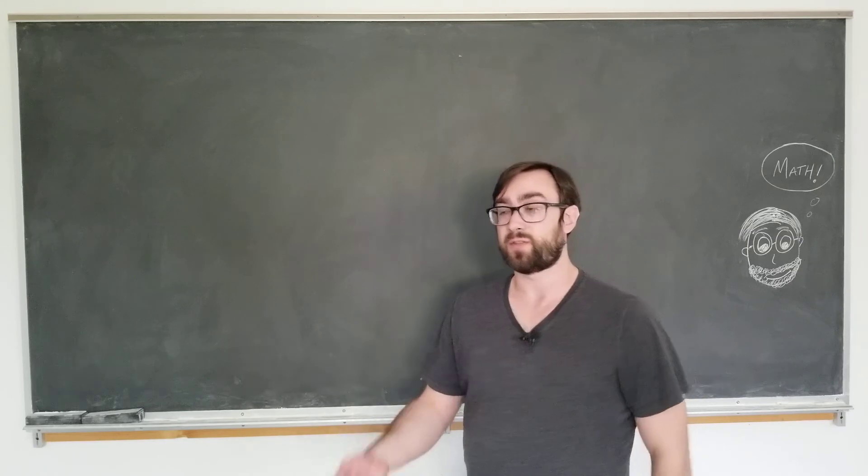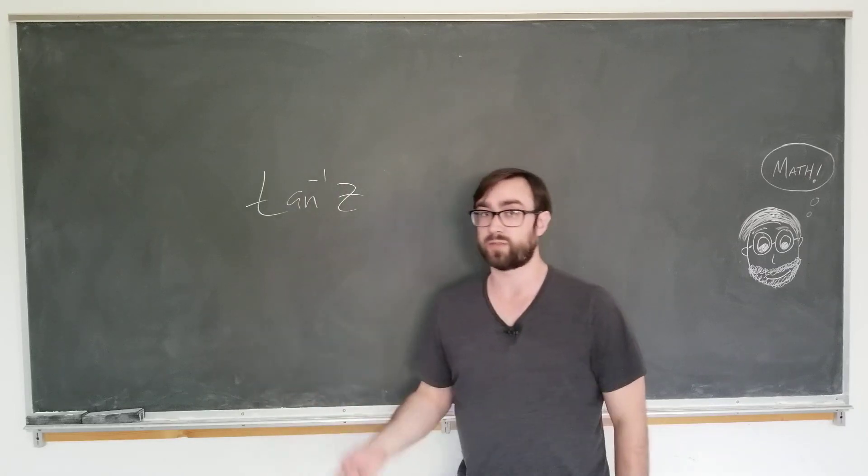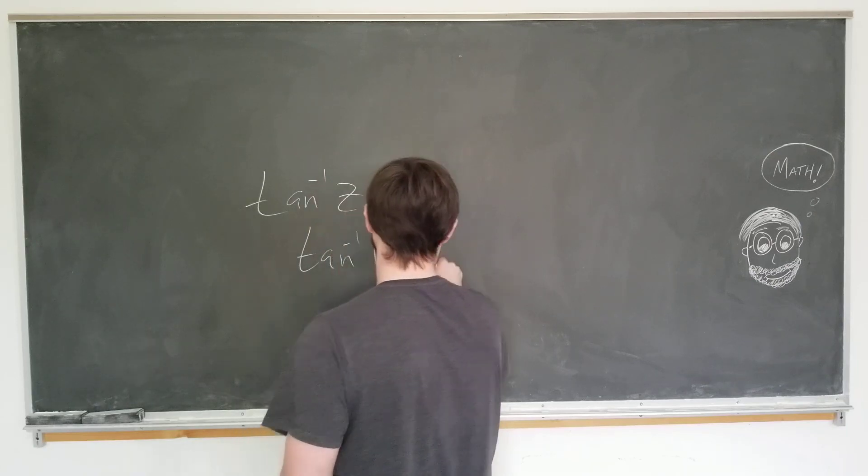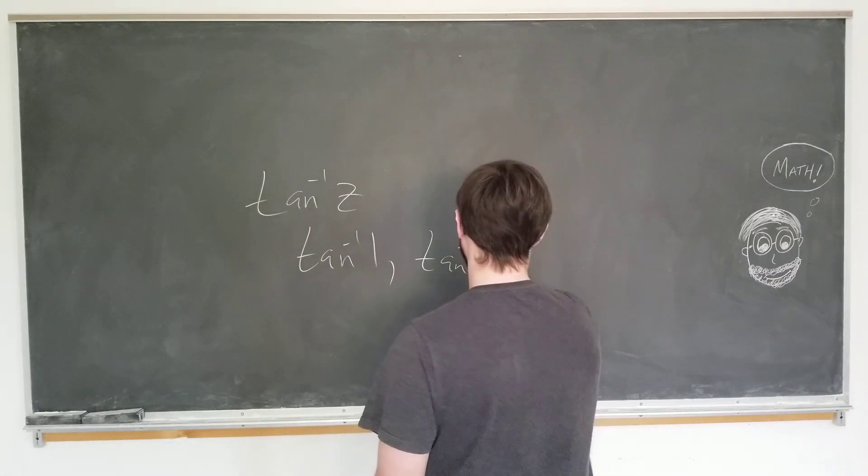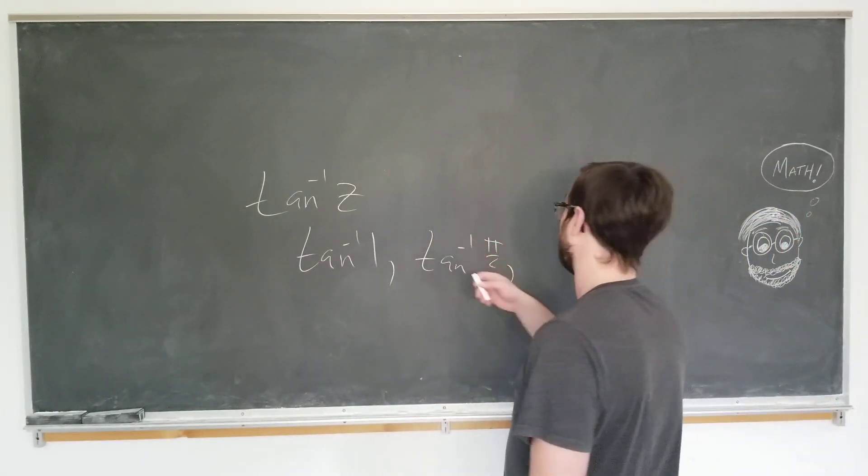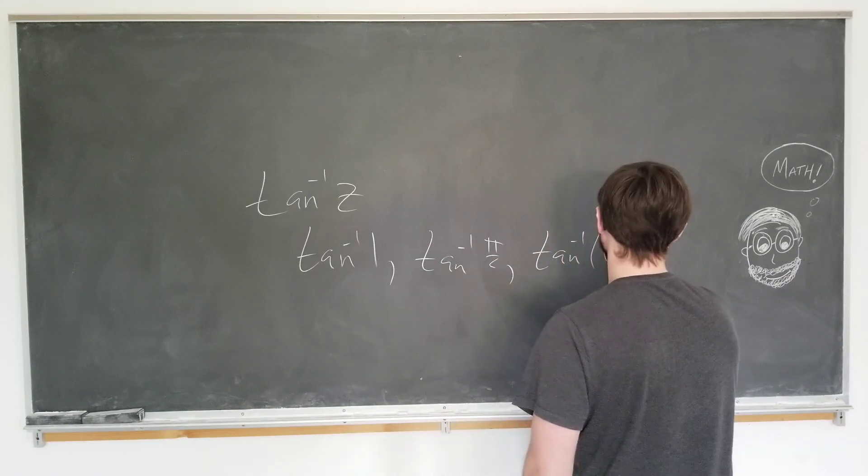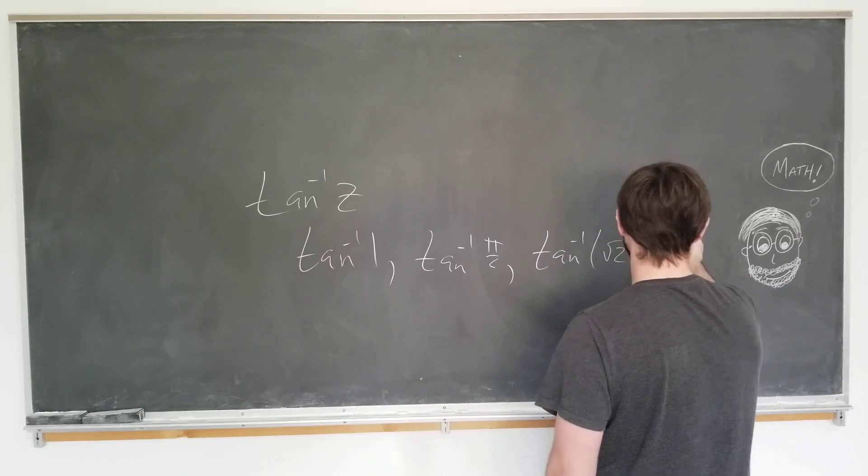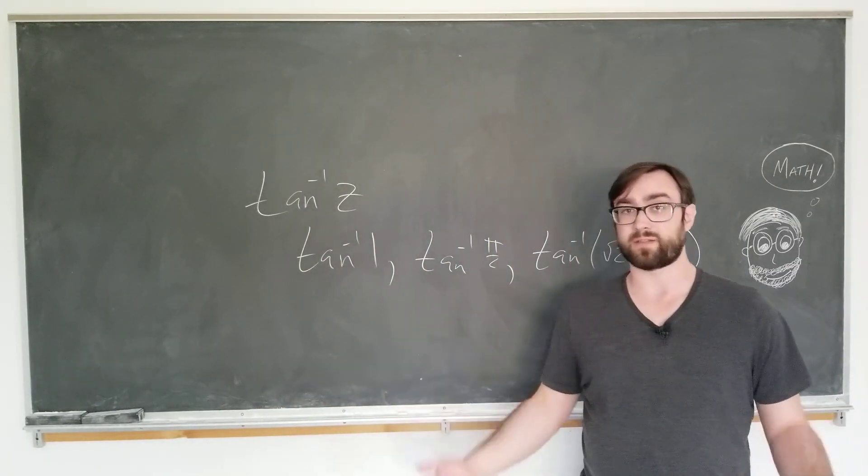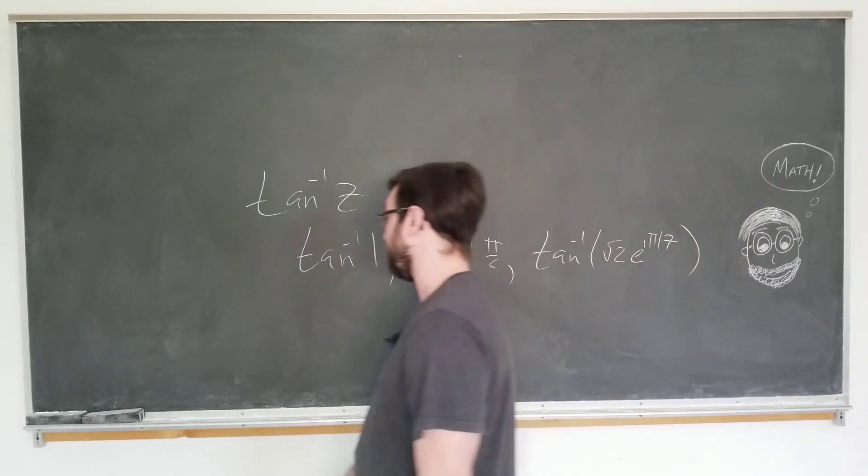In this video, we are going to be extending the arctangent function to complex values. Typically we can only evaluate arctangent of 1 or arctangent of pi over 2. In this video, we want to be considering arctangent of any complex number, say the square root of 2 e to the i of pi over 7. We want to be able to evaluate the arctangent for complex values. Just because we think it should be possible. Let's go ahead and get started.